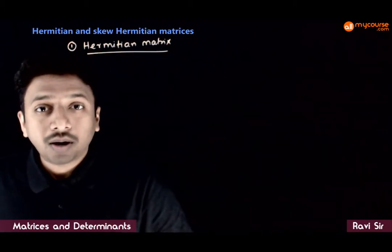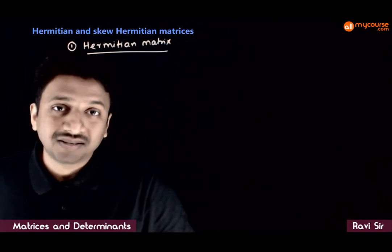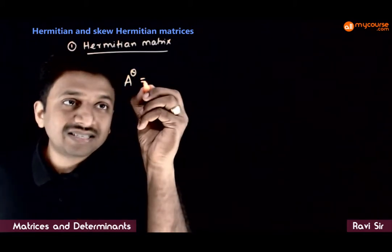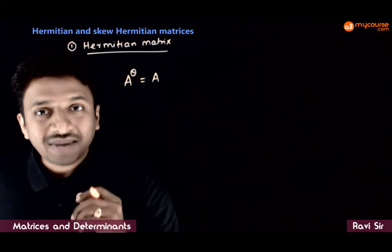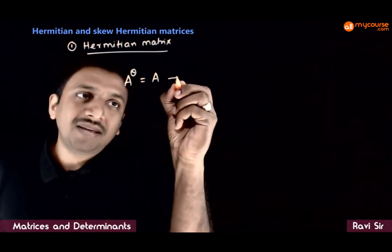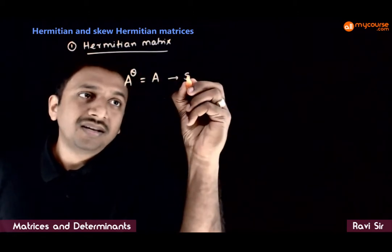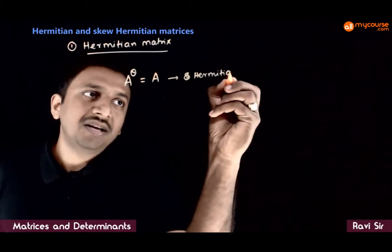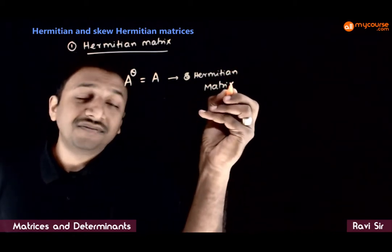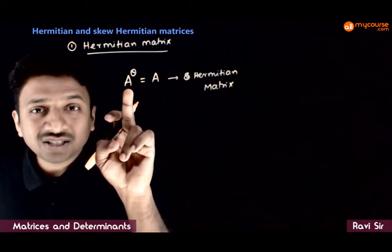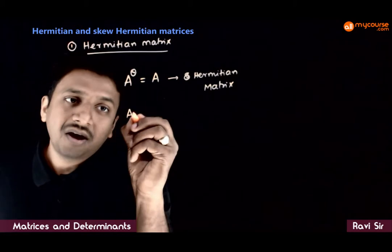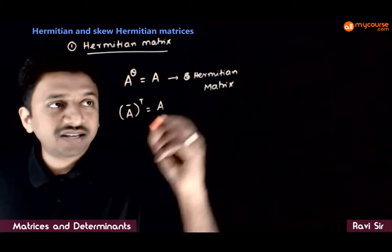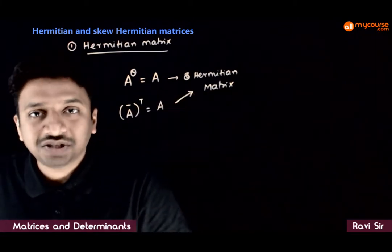We have already learned what the transpose conjugate of a matrix is. If the transpose conjugate of a matrix is exactly the same as the original matrix, then the matrix is called a Hermitian matrix. The definition is: if the conjugate transpose of a matrix is equal to the original matrix, then it is called a Hermitian matrix.